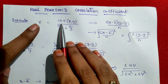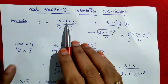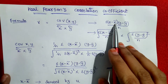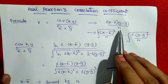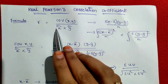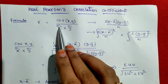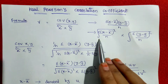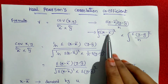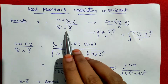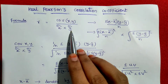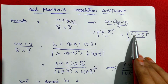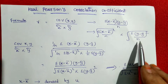Here, what is the covariance of xy formula? Covariance of xy formula is summation of x minus x-bar into y minus y-bar, divided by n. Here, sigma x means standard deviation of x — the formula is square root of summation of x minus x-bar whole square by n — and standard deviation of y is square root of summation of y minus y-bar whole square by n.